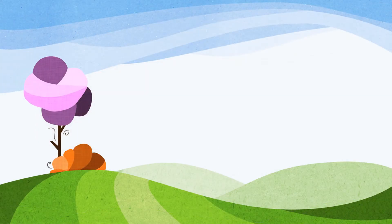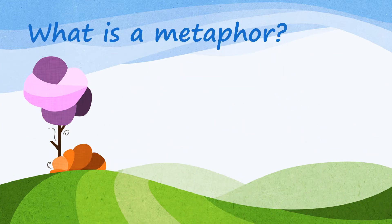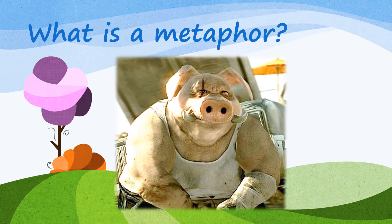Now that we have similes under our belts, let's stick a nail in metaphors. A metaphor says that something is like something else. Let's take this sentence for example: Mr. Butler is a pig. Notice that we never use the words like or as. But is Mr. Butler really a pig? No. But the writer may want to illustrate that his behavior is equal to that of a pig.